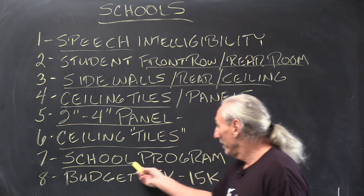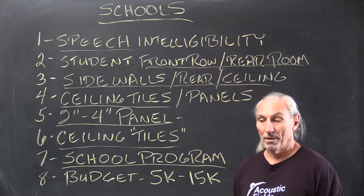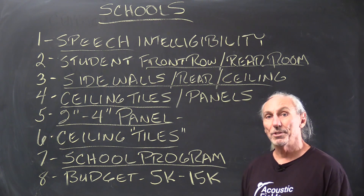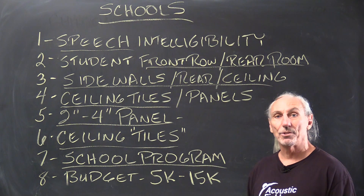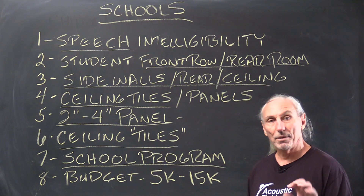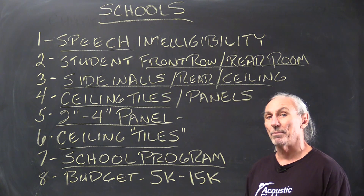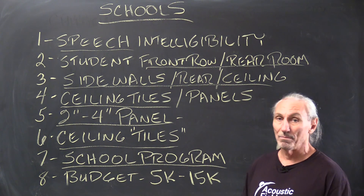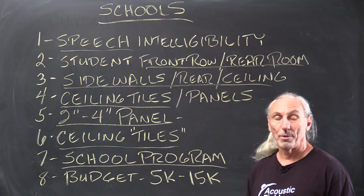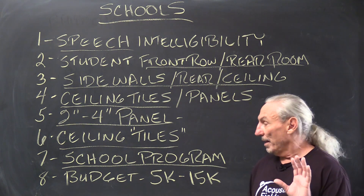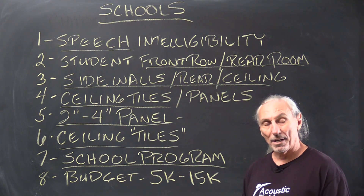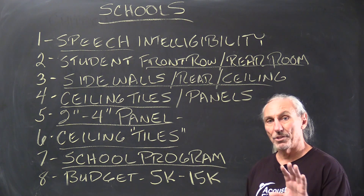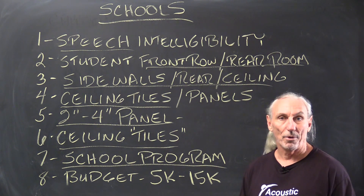Schools are notoriously out of money, so what we did is come up with a school program, just like we did for churches. We'll do the design work for free — we usually charge for that as a fee-based service. We'll run the analysis, tell you how much square footage you need, where to put it, what type of product, and give you a price. If you want us to build it, that'll be your price. If the cost is too much — which in most cases it is — that's the reason we came up with the school program. We'll do the design work free and sell you the products, the technology, and the materials to solve your room problems.